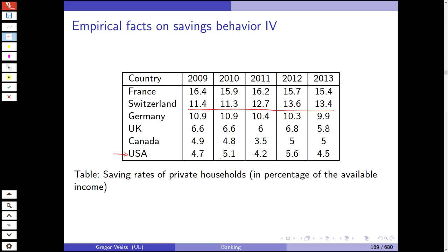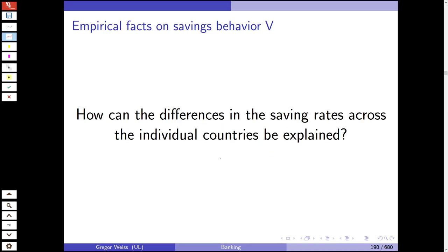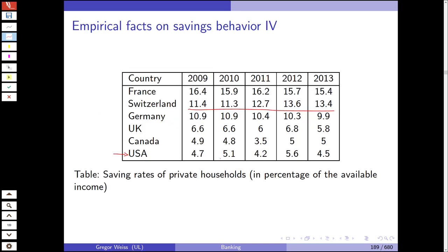Does anyone have an idea why Canada and the USA have a rather low savings rate in comparison to European countries? How would you try to explain those differences?